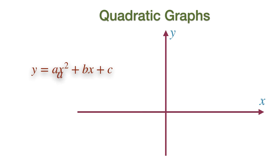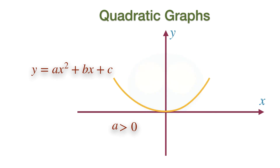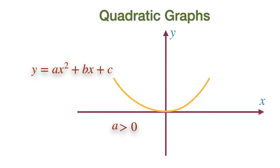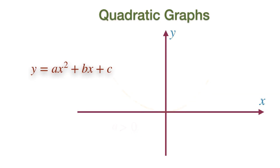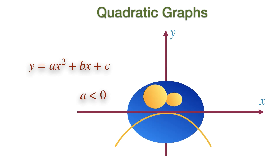If the constant number in front of X squared is a positive value, this gives rise to a graph looking like a smiling face. If the value of A is negative, or less than 0, then it will give us the graph looking like a sad face.